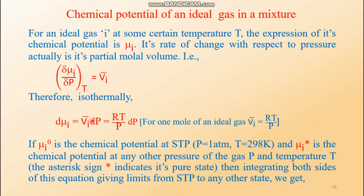Since temperature is constant, we have mentioned the terminology isothermally. Now, the heading is for an ideal gas. So for one mole of an ideal gas, the ideal gas equation can be applied. V̄ᵢ must equal RT/P because this is the molar volume for one mole, where n equals 1, so PV = RT, meaning V = RT/P. So V̄ᵢ is RT/P, and we write RT/P instead of V̄ᵢ.